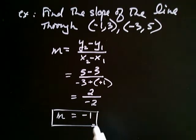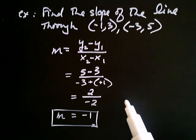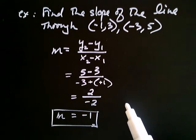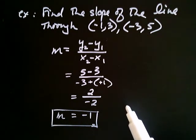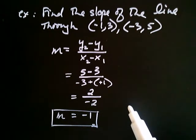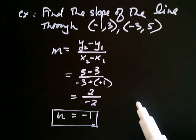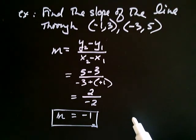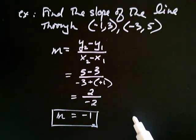You might be asking, is there another way to find the slope of a line? It turns out there is. We're going to develop something called the slope-intercept form of a line, and we'll see that that, amongst other things, gives us the slope of a line. So there are multiple ways of finding the slope. In this video we found it using two points.